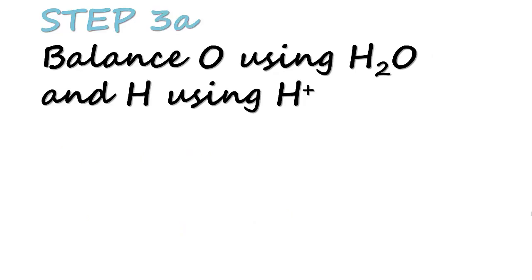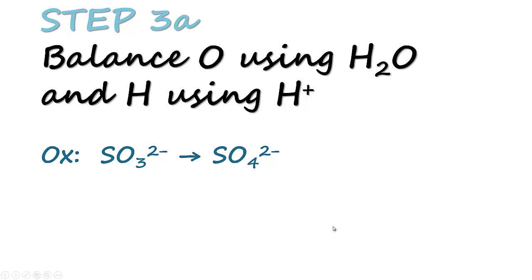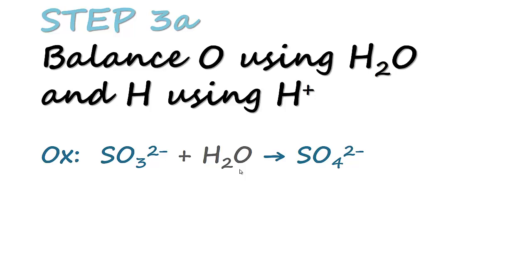In step three we need to balance oxygen using H₂O and hydrogen using H⁺. In our oxidation equation we have one additional oxygen on the right hand side, so we will add H₂O on the left hand side to balance the oxygen. Now because we have added water, we have an additional two hydrogens on the left hand side, which we balance with two H⁺ on the right hand side.